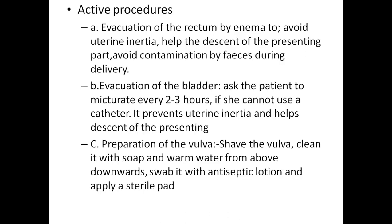Active procedures during the first stage include evacuation of the rectum by enema — to avoid uterine inertia, help engagement of the presenting part, and avoid contamination by feces during delivery. Evacuation of the bladder: ask the patient to micturate every two to three hours; if she cannot, use a catheter. This prevents uterine inertia and helps the descent of the presenting part. Preparation of the vulva: shave the vulva, clean with soap and warm water from above downwards, swab with antiseptic lotion, and apply a sterile pad.